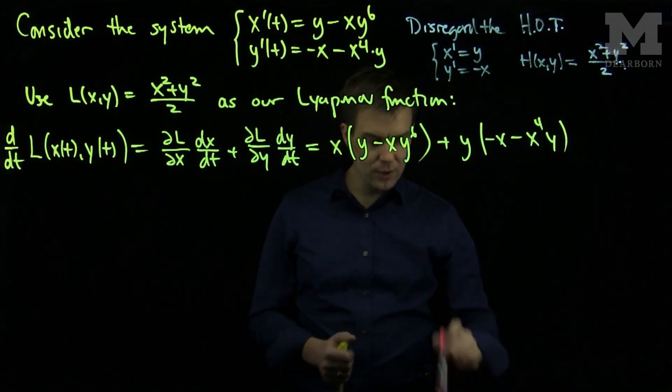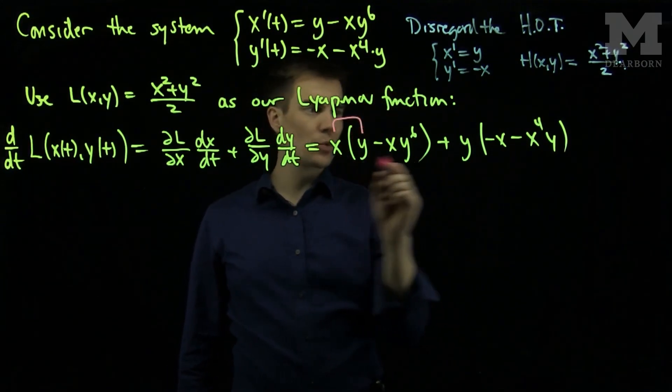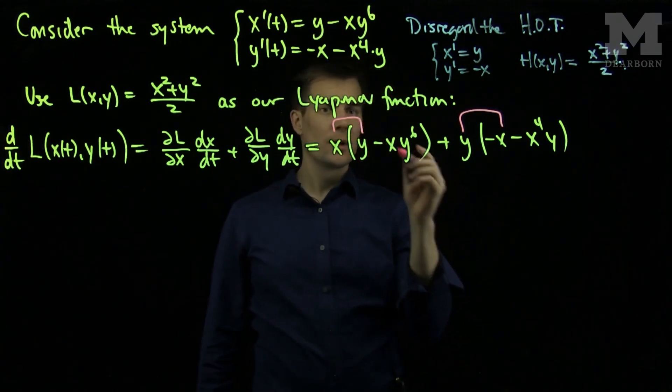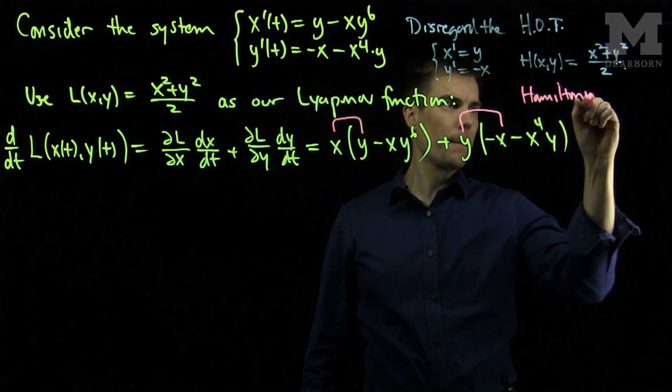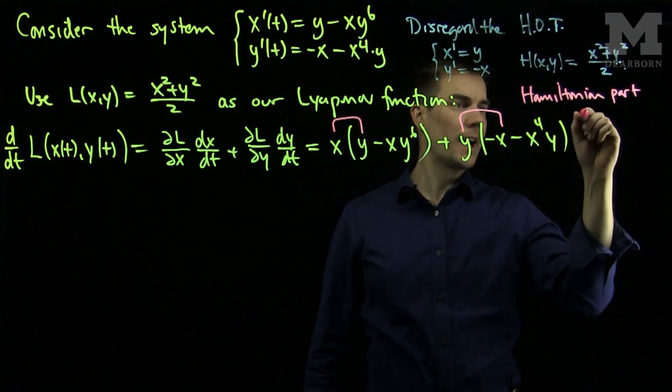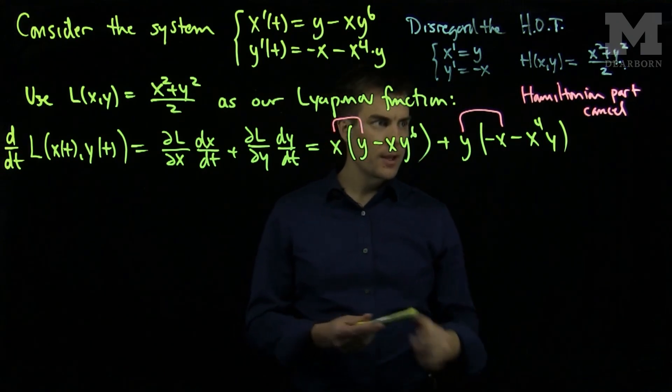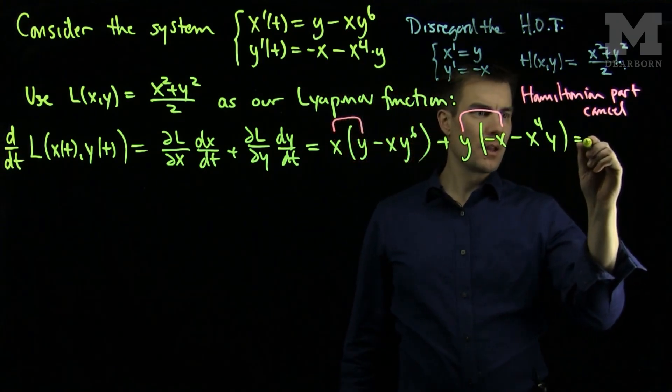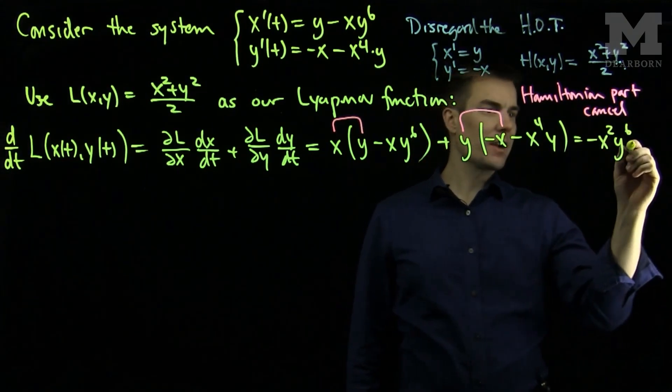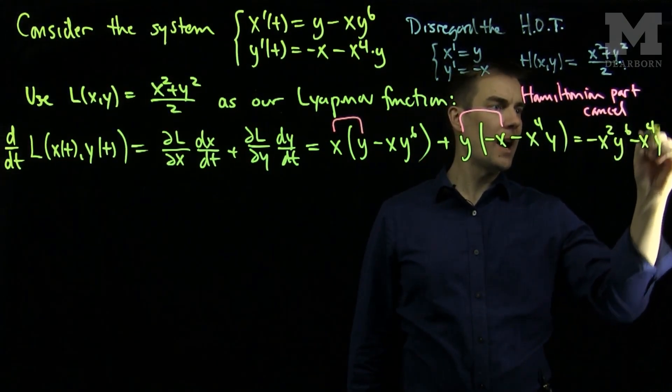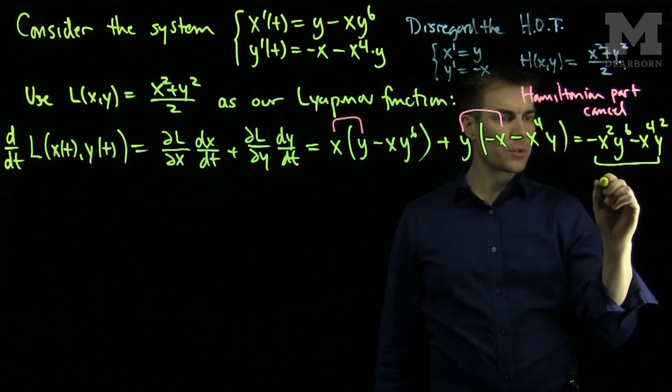Now, if we look at the terms in our expression over here, the Hamiltonian part xy and y negative x will cancel. So the Hamiltonian part will cancel, and what we will be left with is the expression negative x squared y to the sixth and negative x to the fourth y squared. And we can notice that all of these terms are negative.